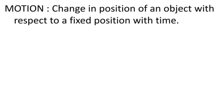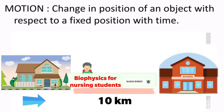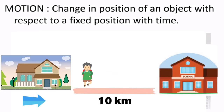In order to understand the definition of motion easily, you first need to know the meaning of the words: change in position, object, fixed position, and time. When you know these things clearly, it becomes easy to understand the definition or meaning of motion. I will try to explain the definition of motion with a simple example.